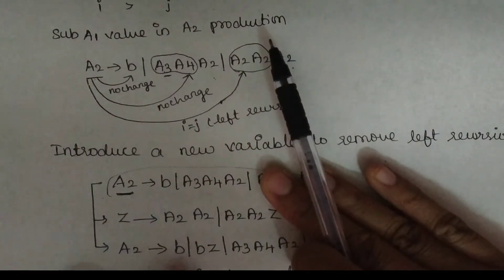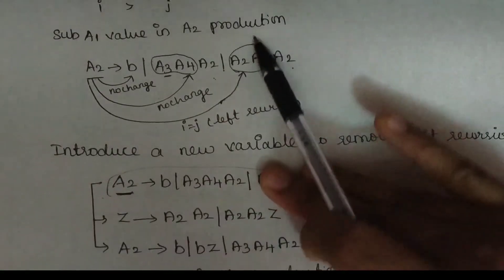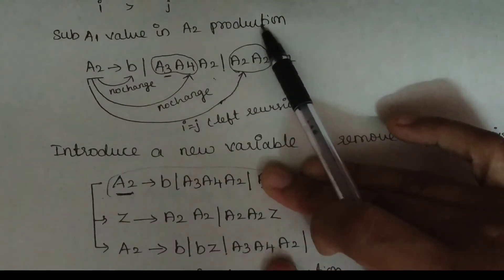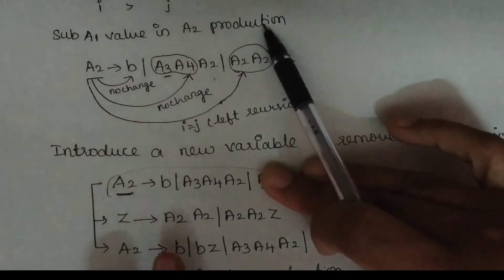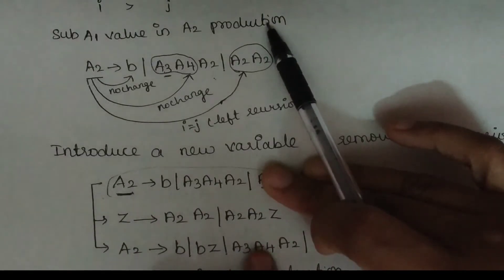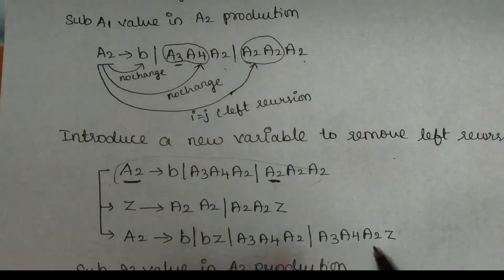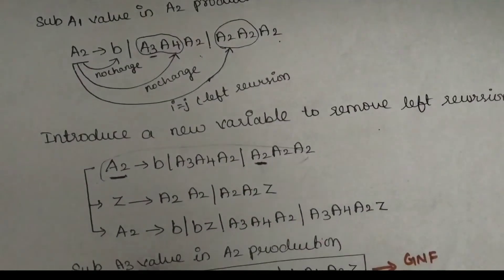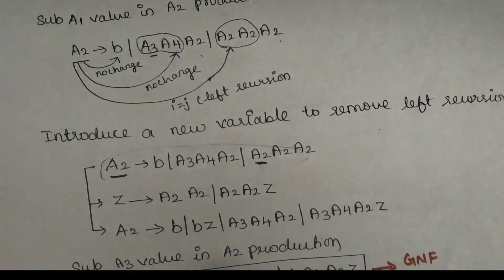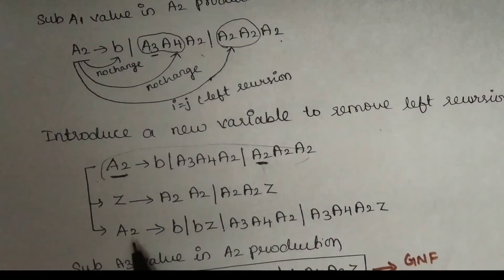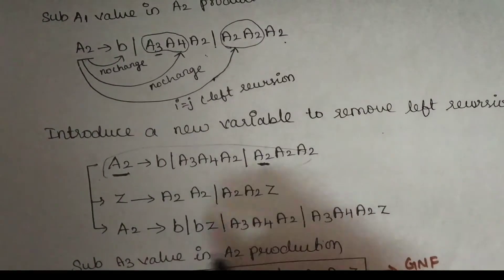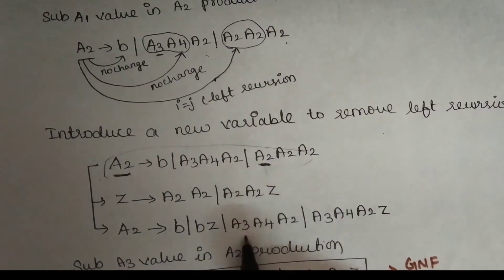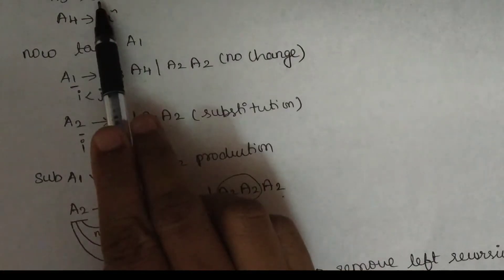A2 goes to B, and A3, A4, A2 is here. A3, A4, A2 is here. B is here and there is a Z. That means A2 goes to B, there is a Z, there is A3, there is a Z. B is here and there is a Z.